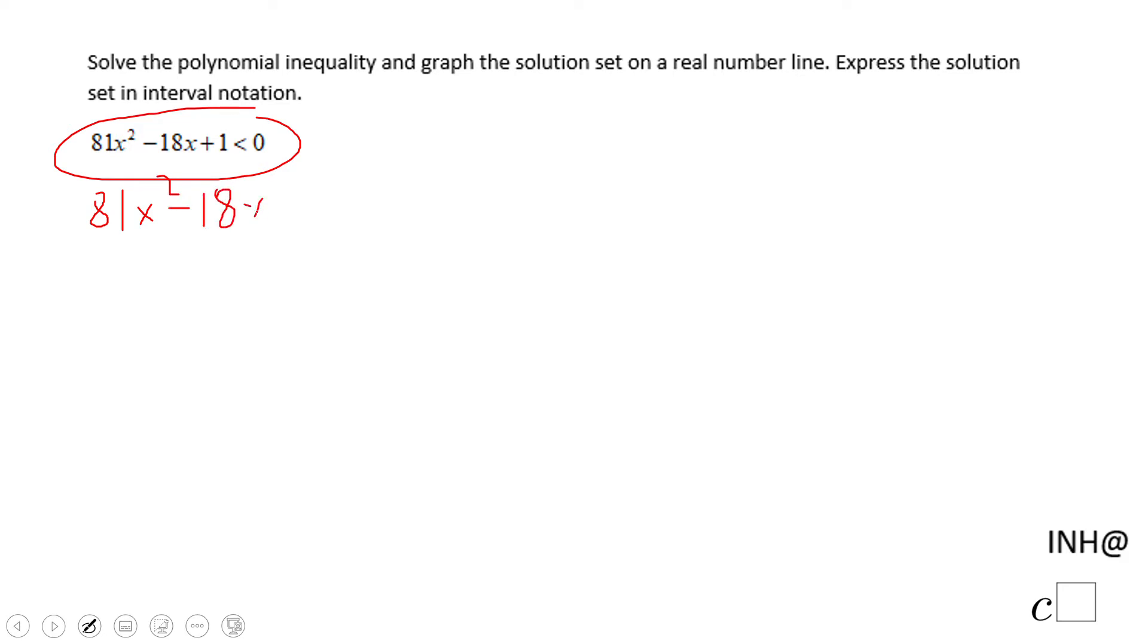because we want to find out when it equals zero. And this one is a perfect square. This one is 9x minus 1 squared, again equals to zero.